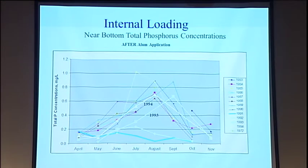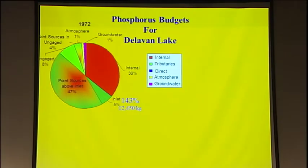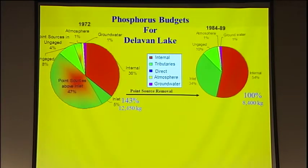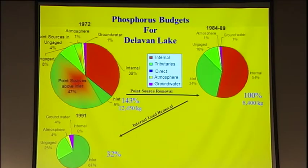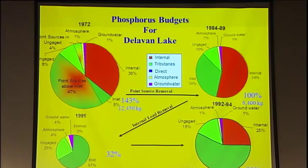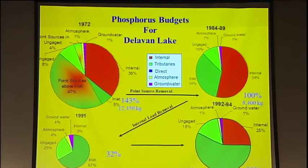So looking at where we started in 1984 as the base case at 100%, once we added the point sources on, we were up to 143%. By 1984 to 89, we were at 100%. We wanted to be at about a 70% reduction after the rehabilitation, but it didn't work — at least not in the short term. In the short term, we were right back to where we were. All that work in the watershed wasn't really working because of Mother Nature hurting us.